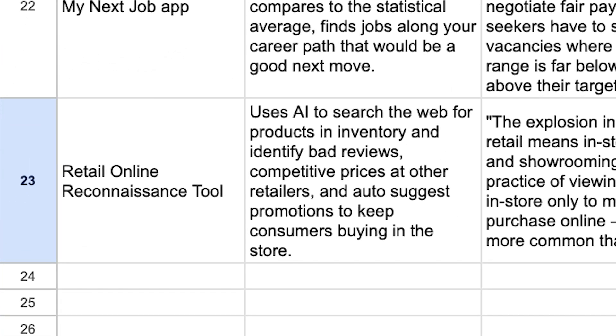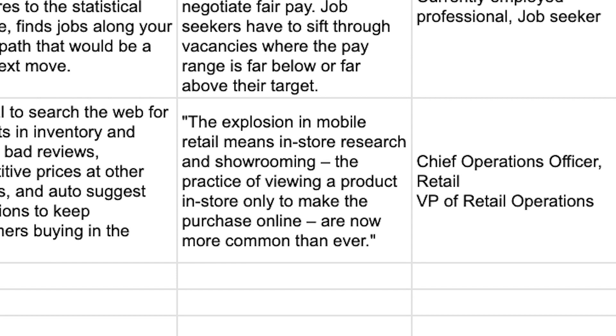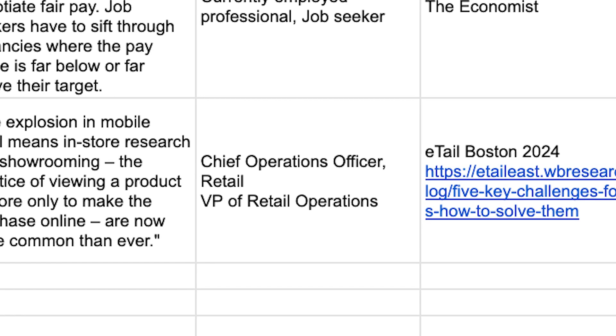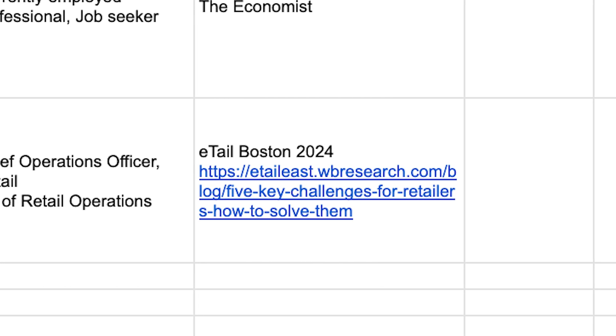So let's go to the idea log. For the summary, I put retail online reconnaissance tool. And for the description, I wrote, uses AI to search the web for products in inventory and identify bad reviews, competitive prices at other retailers, and auto-suggest promotions to keep consumers buying in the store. For the problem/opportunity, I pasted the quote from the article. For the persona, I think that this could be either the chief operations officer or maybe like the VP of retail operations. And for the source, I put e-tail Boston 2024, and I pasted the link to the original article. App idea? Check.